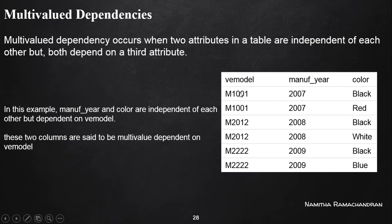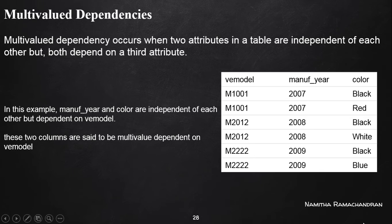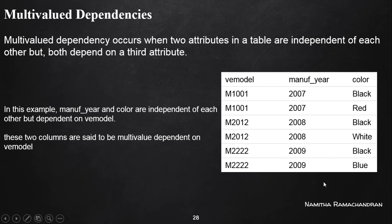So color is not dependent on manufacturing year. Similarly, if a manufacturing year is given, we can't always uniquely identify the color attribute, because there are possibilities of different colors for a particular vehicle model. So if a manufacturing year is given, we can't uniquely identify the color of that vehicle.